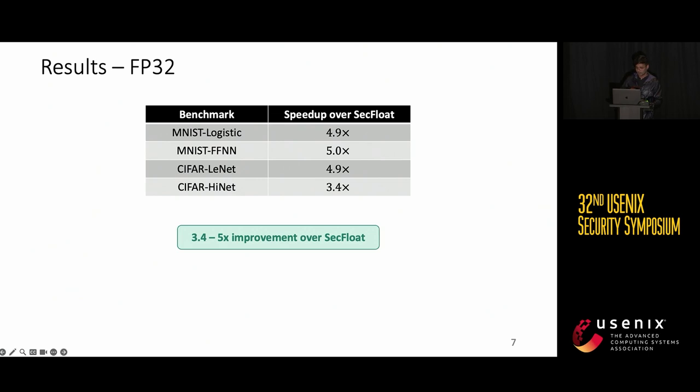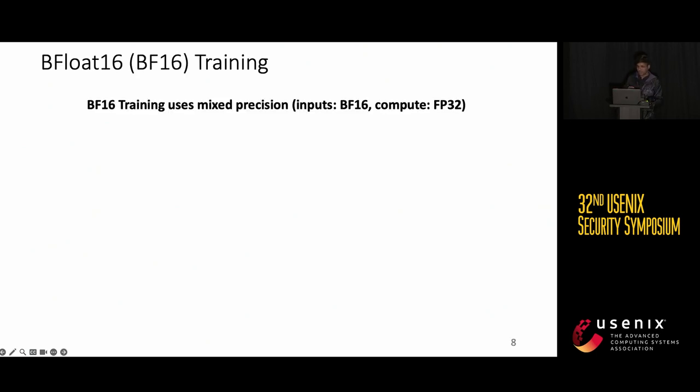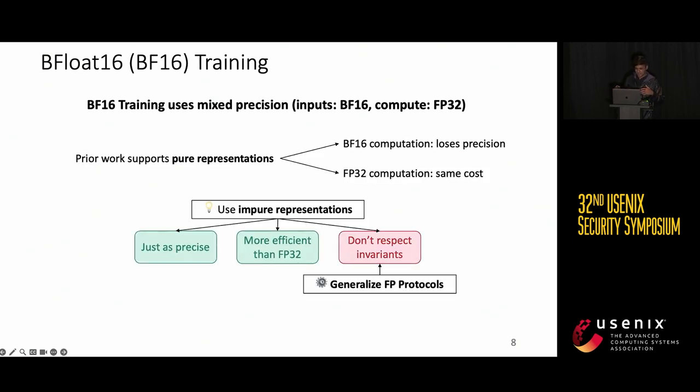These are our improvements for FP32, but there's actually another avenue for improvement. We already know from the ML community that there are other floating-point formats which are much more efficient and work just as well. In this work, we also look at those formats, and in particular, the most popular one is BFloat16. Since I'm running out of time, I won't get into the details, but the high-level idea is that BFloat16 training uses a mixed precision, so it uses both BFloat16 and FP32, and this is incompatible with prior works. But in Beacon, we introduced support for mixed precision representations which allow us to leverage this format and get some nice improvements. Overall, with the support for BFloat16 training, we get up to seven times improvement over prior work.